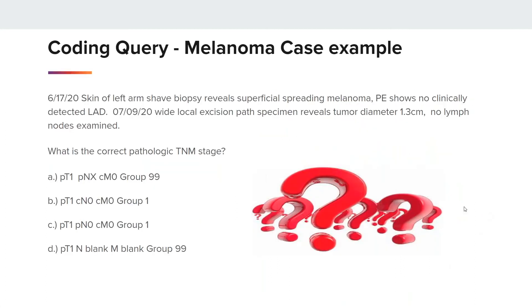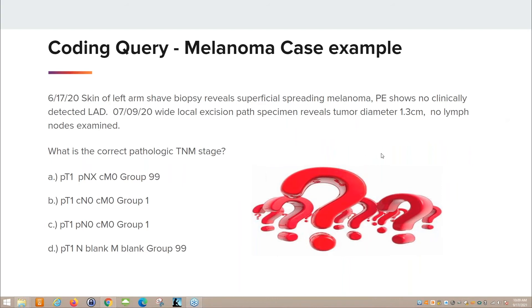Our next example is melanoma. On 6-17-20, a skin of left arm shave biopsy reveals superficial spreading melanoma; pathological exam shows no clinically detected lymphadenopathy. On 7-9-20, there was a wide local excision. The path specimen reveals a tumor diameter of 1.3 centimeters. No lymph nodes examined. What is the correct pathologic TNM stage? Is it A: PT1, PNX, CM0, group 99; B: PT1, CN0, CM0, group 1; C: PT1, PN0, CM0, group 1; or D: PT1, N-blank, M-blank, group 99?